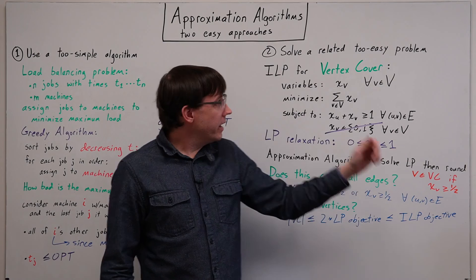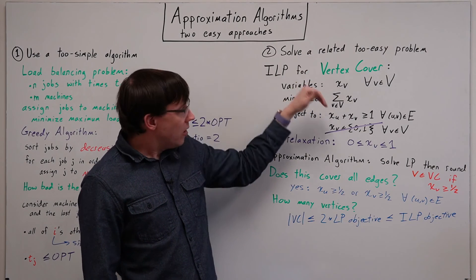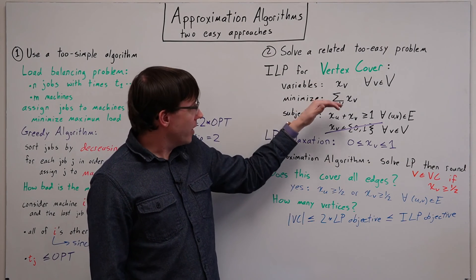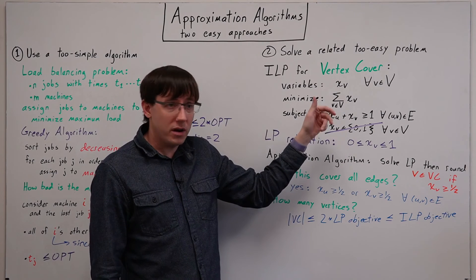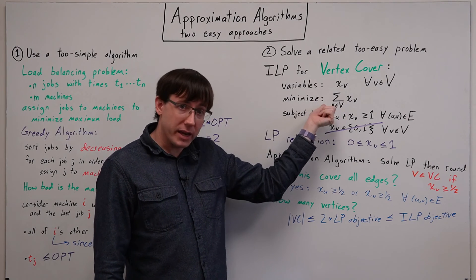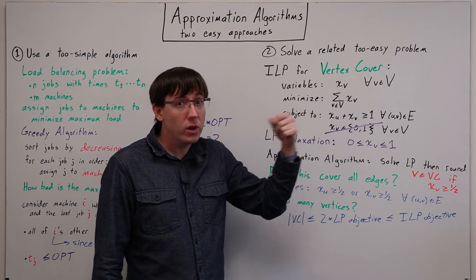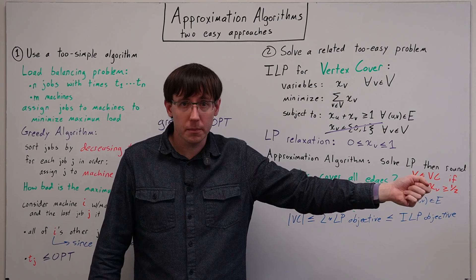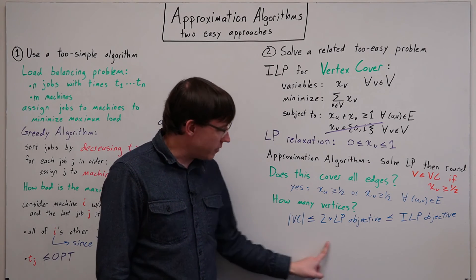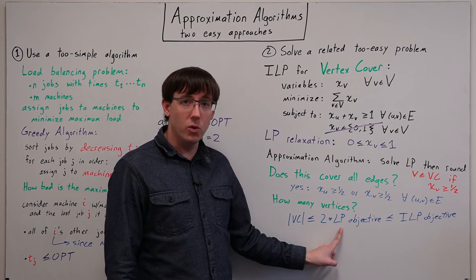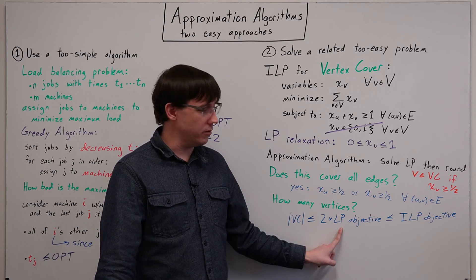We've only relaxed the constraints by going from the set {0, 1} to the range from 0 to 1. And so it might be the case that solving the linear program gives us a smaller objective, but the objective we get from the linear program can only be better.